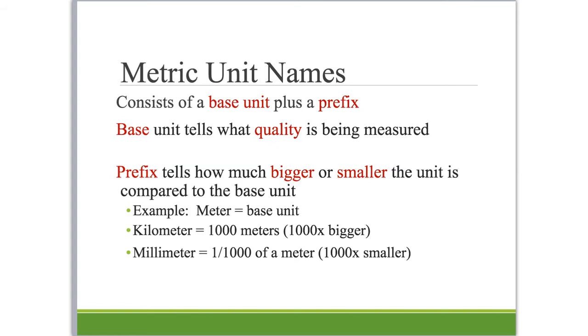The names of different units in the metric system have two parts: a base unit (meter, liter, or gram) plus a prefix. The base unit tells you what quality is being measured—is it length, mass, or volume? The prefix tells you how much bigger or smaller it is than the base unit. So if meter is our base unit, then a kilometer is a thousand times bigger. One kilometer equals one thousand meters, and a millimeter is one thousandth of a meter.